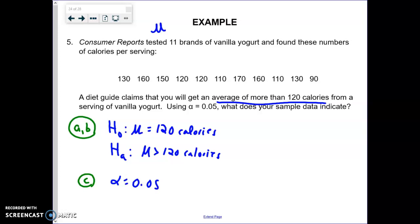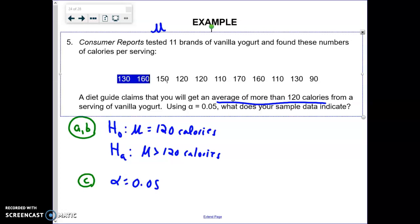Now, we need to look at the requirements for us to be able to do this. We don't know the shape of the population. We've only got 11 brands of vanilla yogurt, so we've got to see, does that sample have any outliers, could it be uniform, or maybe just fairly bell-shaped. So we're going to need to graph that. I'm going to go ahead and highlight these first, so I can just copy and paste them.